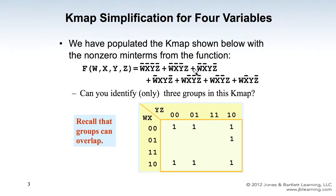From the boolean function, we fill in the KMAP with the value of 1 for each given minterm. Once that step is done, you need to identify the groups of ones that can be combined or grouped together to simplify the function. In this KMAP we can have three groups — and recall that groups can overlap, that's no problem. You can pause the video and think about which values of 1 can be grouped together.